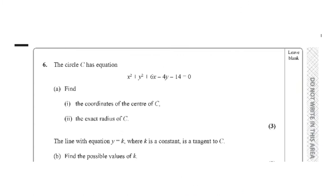The circle C has equation x squared plus y squared plus 6x minus 4y minus 14 equals 0. Part A says find the coordinates of the center of C and the radius of the circle.